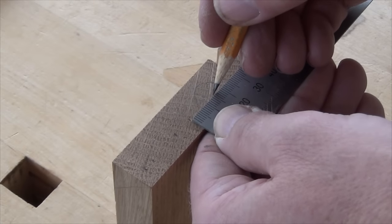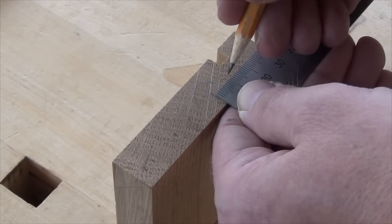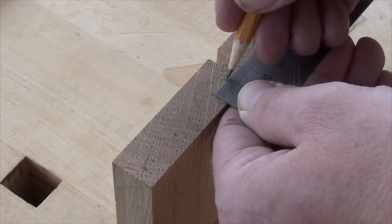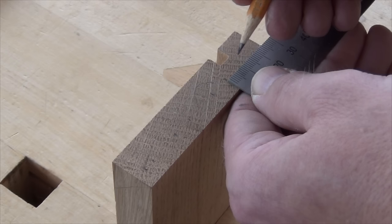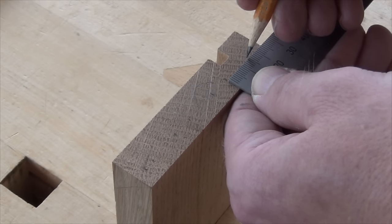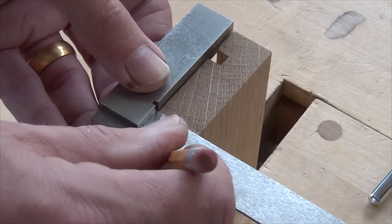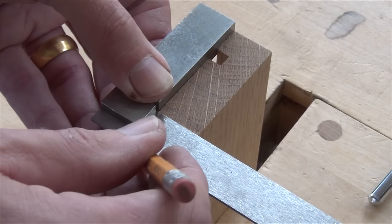I designed the layout for my dovetails so that the groove I put through the boards won't show through the side of the case. I'm just marking out the tail board at the moment. Now I'll just square those marks across the end of the board, and grab my dovetail marking gauge.